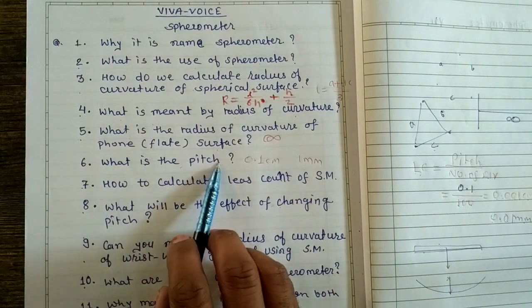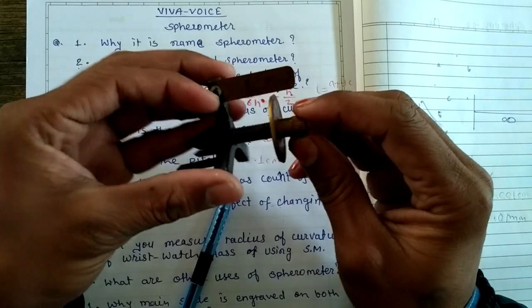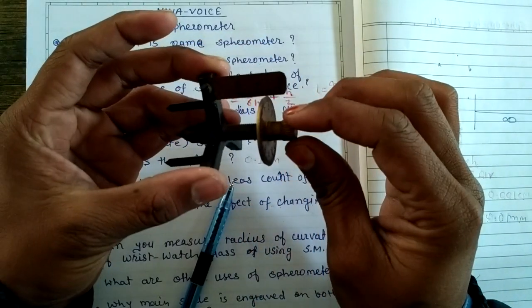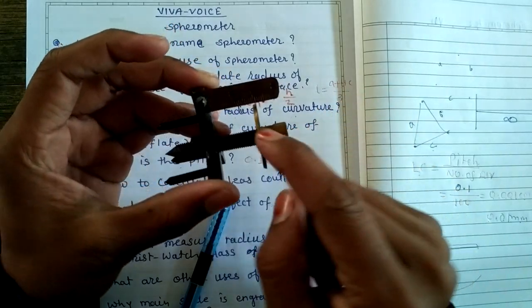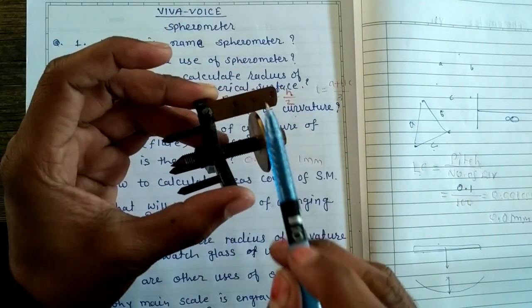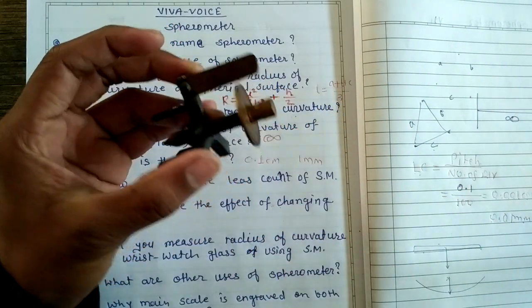One more question: what is the pitch? Pitch is the distance - when we rotate this circular scale in one cycle, the distance moved on the main scale is called the pitch.